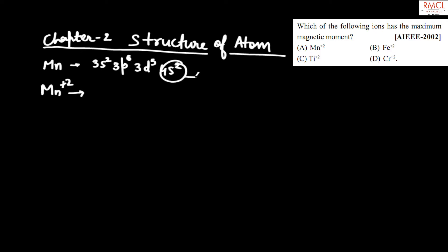In Mn²⁺, two electrons are removed from the 4s orbital, so that's why the maximum number of electrons is 3s² 3p⁶ and 3d⁵.